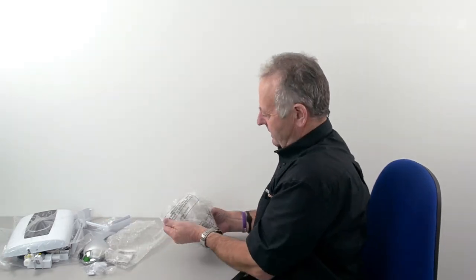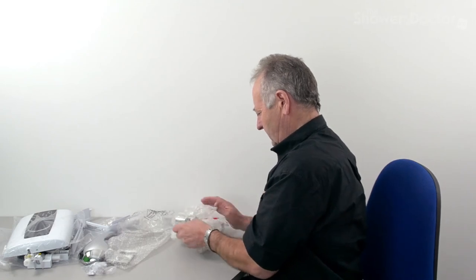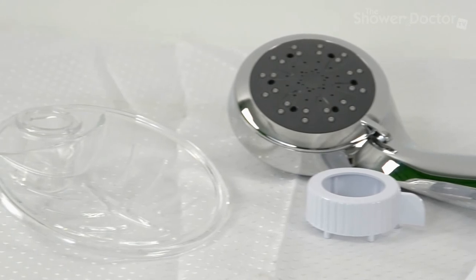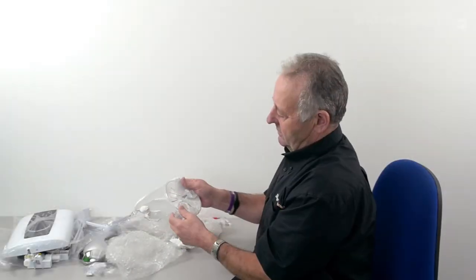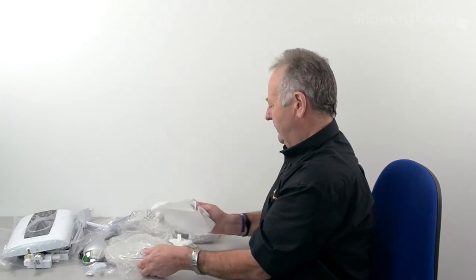And also the other accessories. We've got a good size soap dish here. Some of the units come with a very small dish but that is a reasonable size. You've got plenty room to lay things on that.